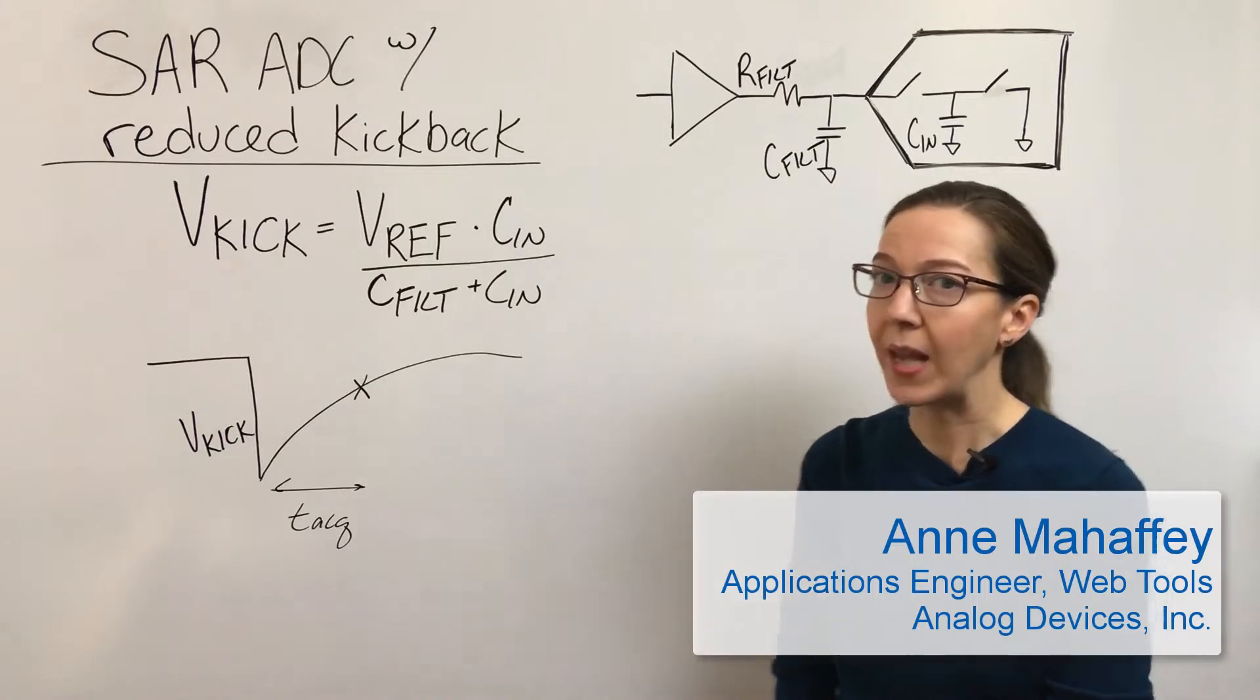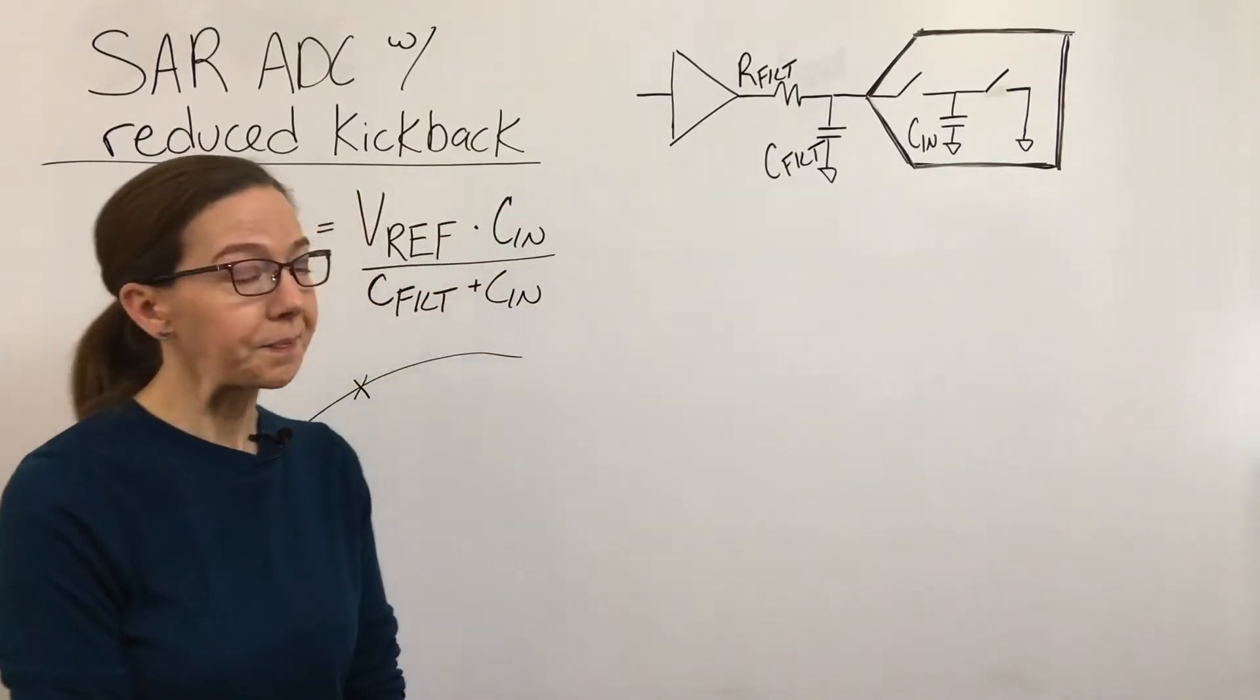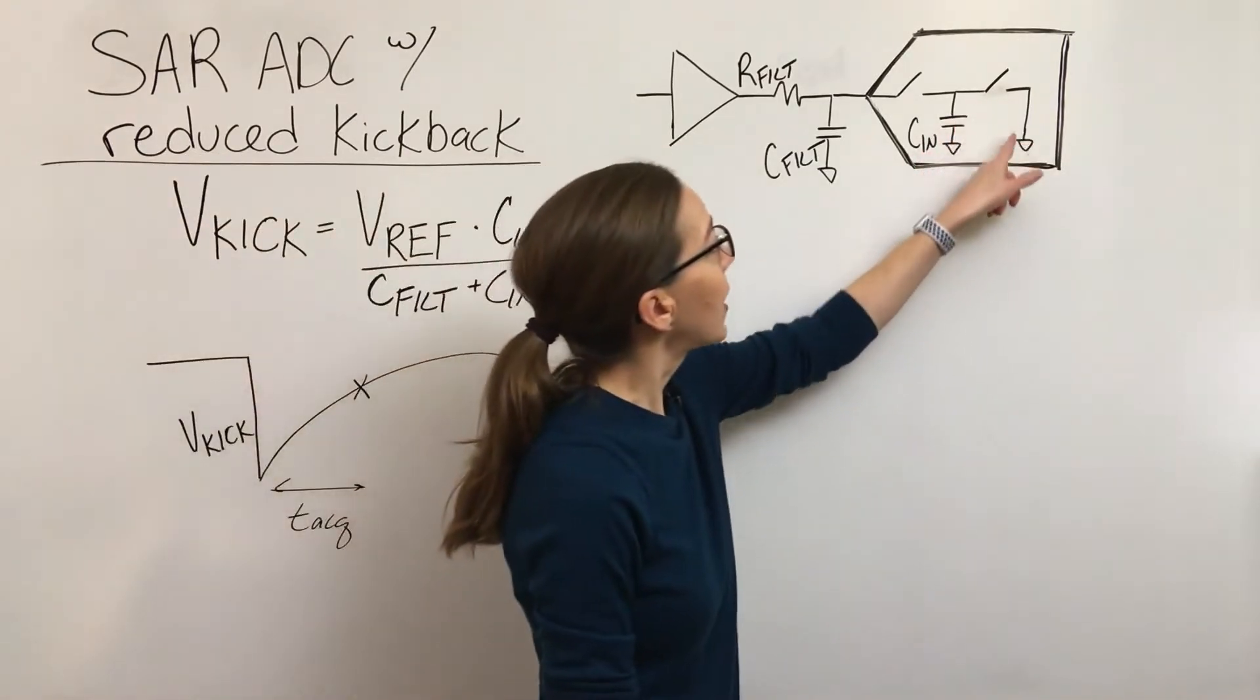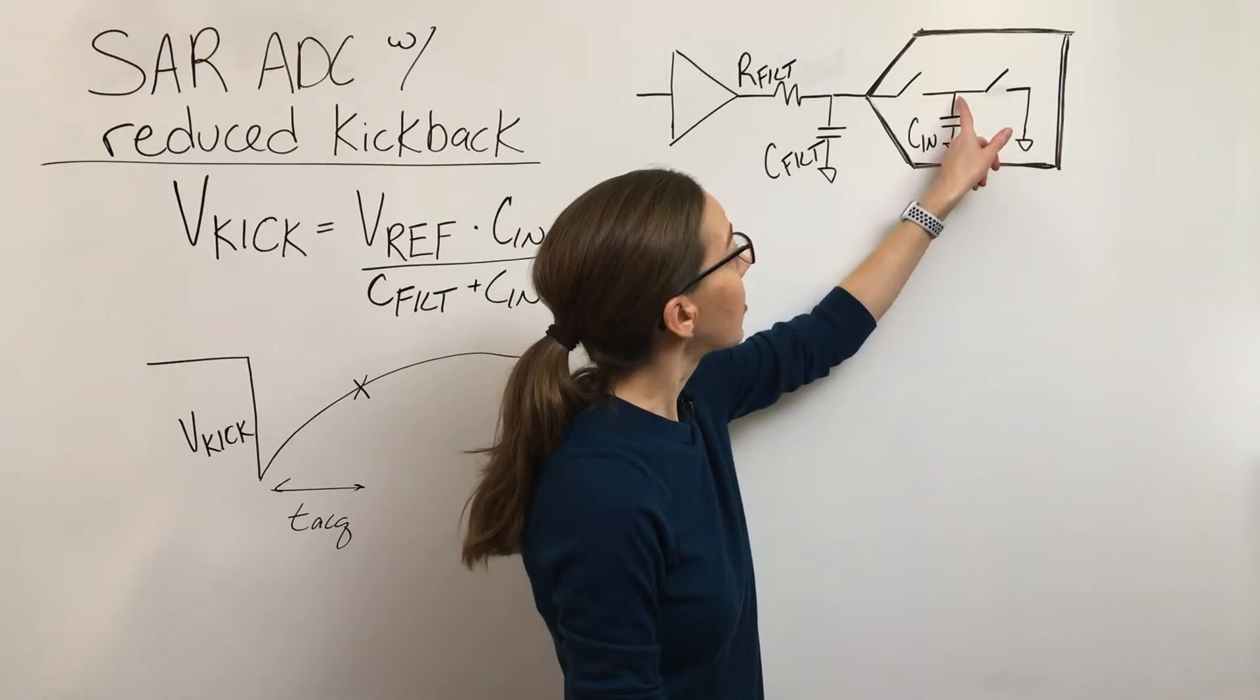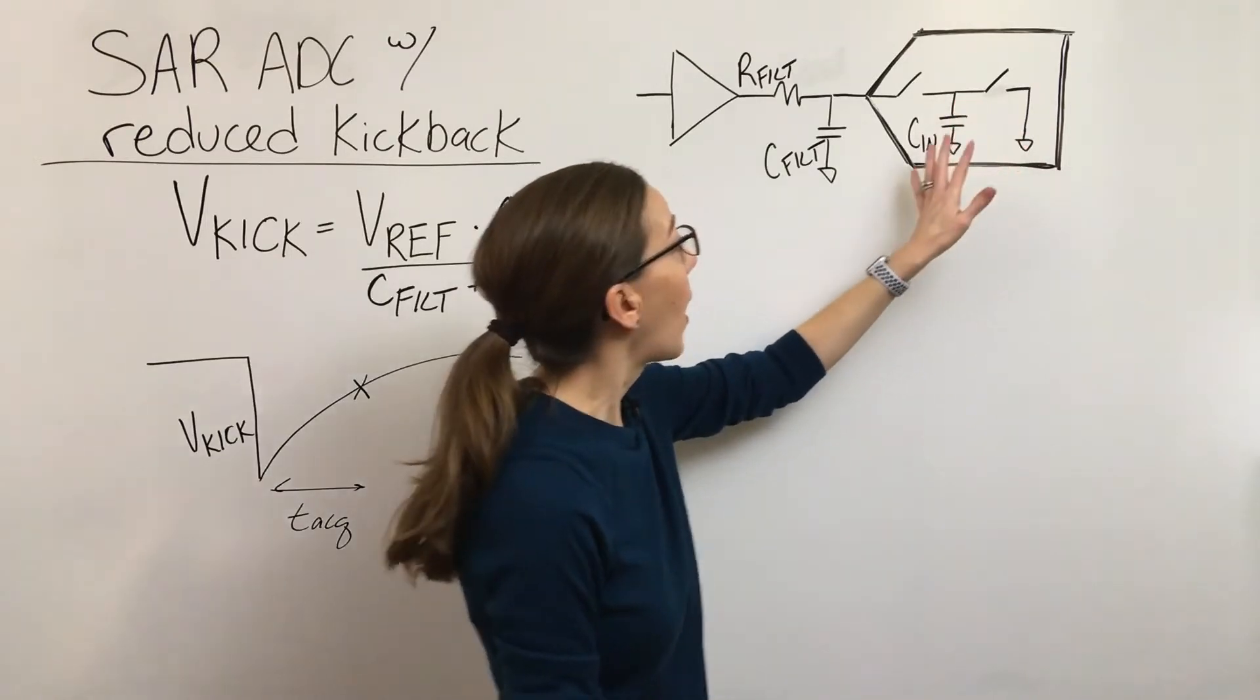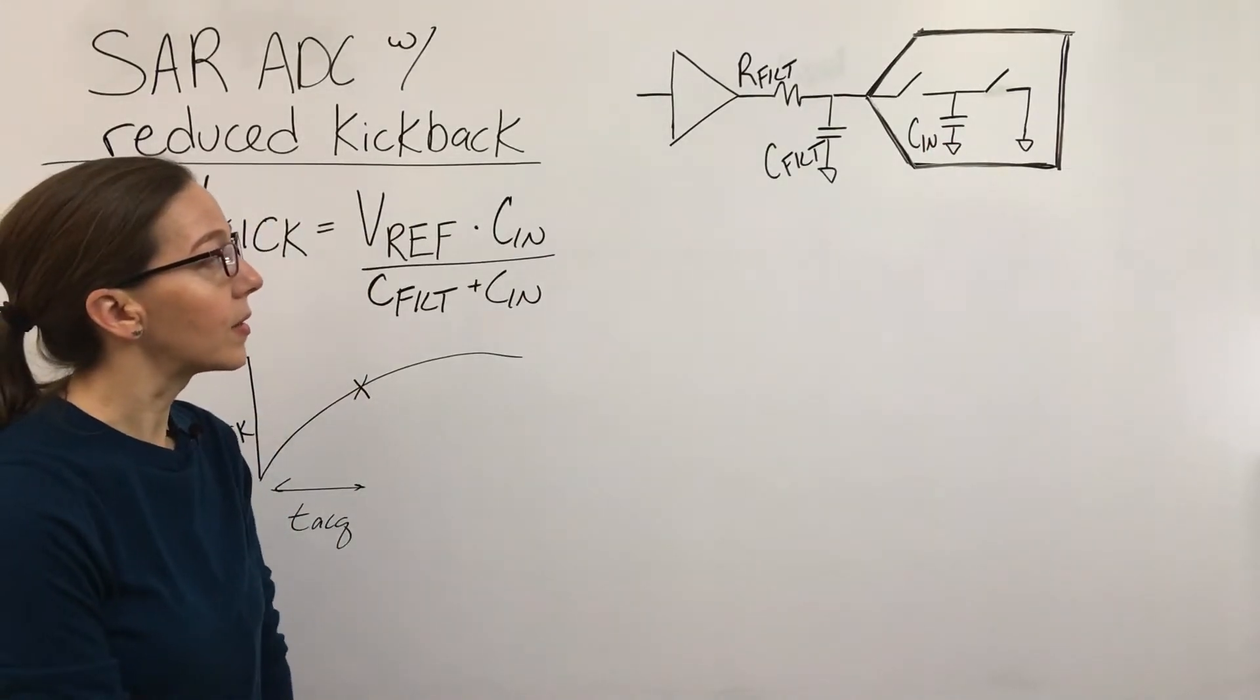In this video, I'm going to talk about ADCs that have circuitry in place to reduce the kickback. These are ADCs where this assumption that we make that this node is discharged to ground before the next acquisition - we've got some ADCs where that assumption is not accurate.